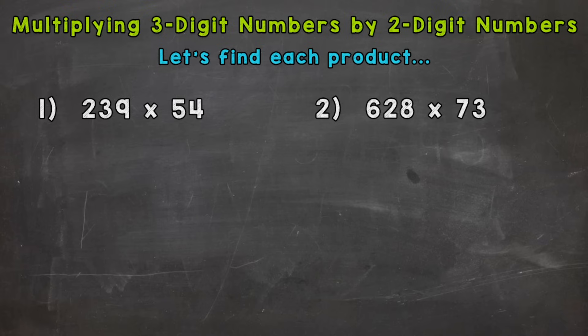And the first thing we need to do is line this problem up. So we can write 239 times 54. Now when writing this problem, it's important that all of our places are lined up. So for example, our nine and four are lined up because they are both in the ones place. The three and five are lined up because they are both in the tens place.